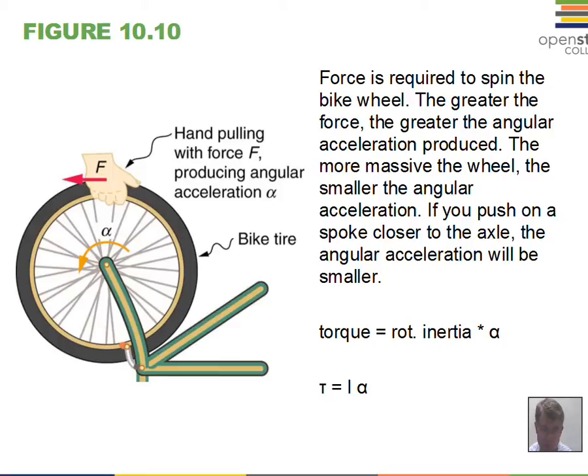How do we make things rotate? In the linear case, we asked why do things accelerate, and found F equals MA gives us an explanation — it depends on the force and the mass. In a similar way, rotation is caused by torque. Torque takes the place of force: if you have more torque, you get more angular acceleration. The relationship is torque equals rotational inertia multiplied by alpha. This is similar to F equals MA, but now in the rotating system.